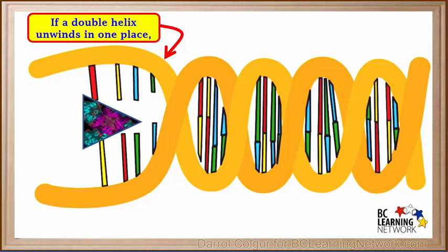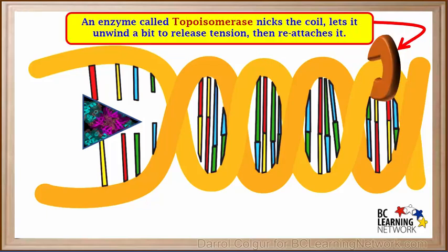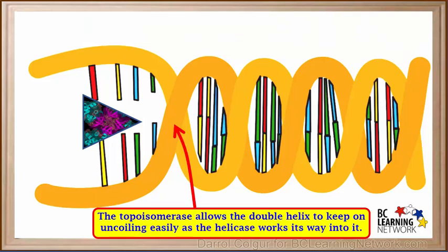Now, if a double helix or coil unwinds in one place, then it would try to wind up more tightly in a different place. In order to prevent the coil from winding too tightly in some places, an enzyme called topoisomerase notches or nicks the coil, lets it unwind enough to release the extra tension, then joins the coil together again. This allows the double helix to keep on uncoiling easily as the helicase works its way into it, without coiling too tightly somewhere else.